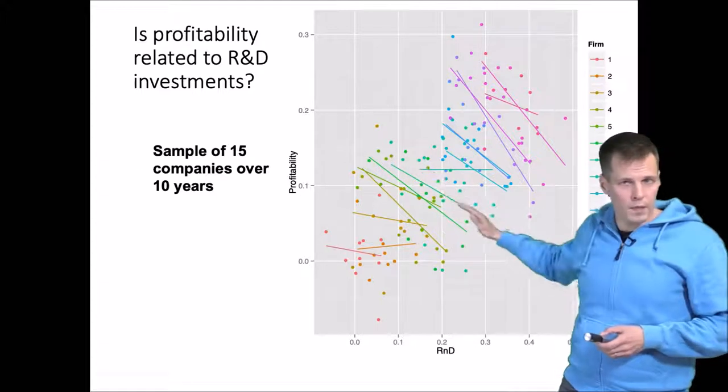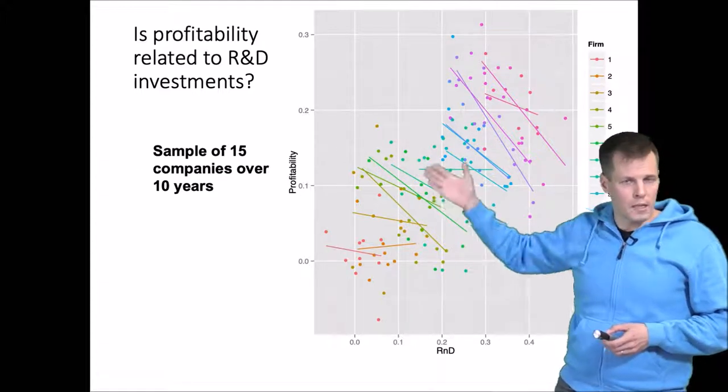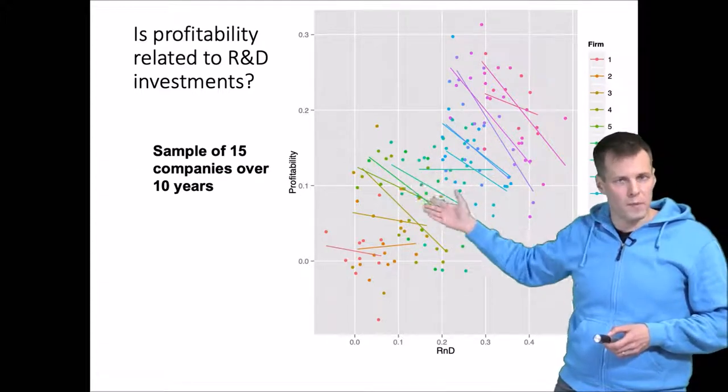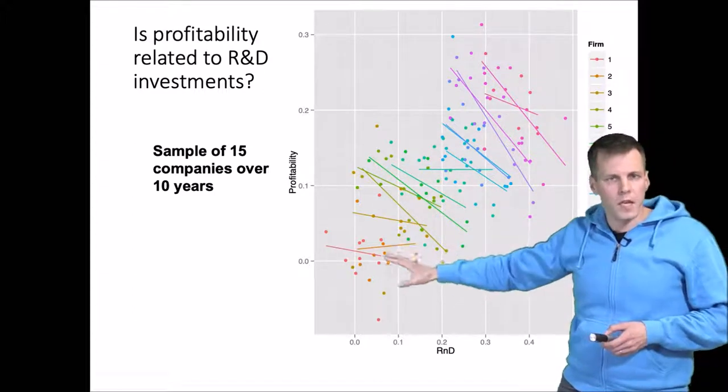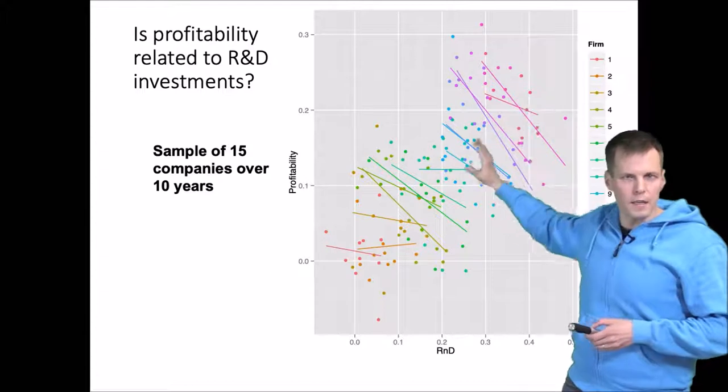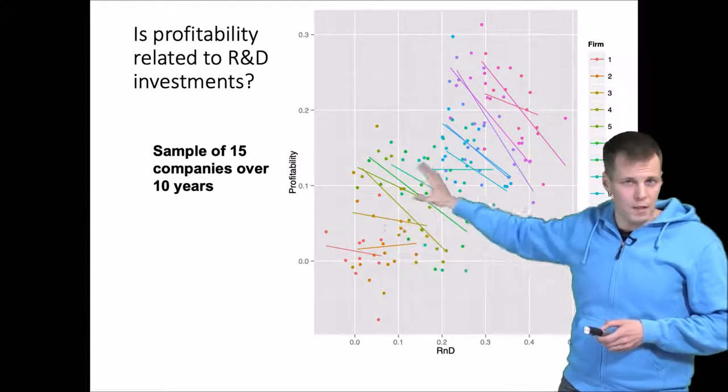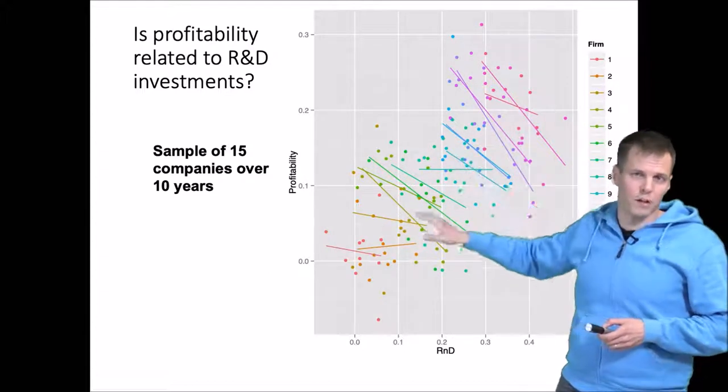Within a company, the effect is negative. So if the same company increases their R&D spending, their profitability will go down. But there are these between company differences that nevertheless cause the overall regression line to be positive.